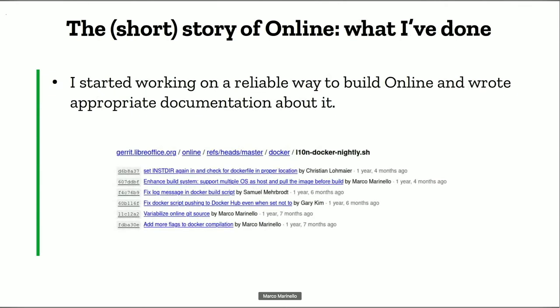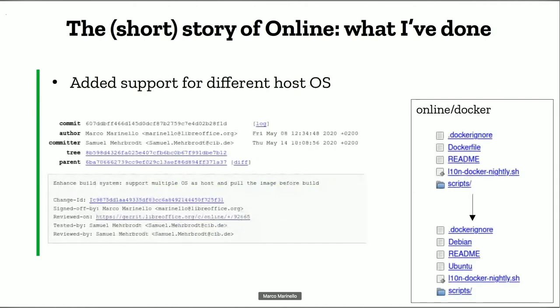So I started working on a reliable way to build Online and wrote appropriate documentation about it. The LNN Docker nightly script was already there and did almost anything we needed — starting from scratch, cloning down the core and Online repository on the branch you want, building it, and then generating a Docker image. It just needed to be expanded a little, for example adding support for different host operating systems. Back then there was only one Dockerfile, which was for Ubuntu, and if you were building on Debian and copying the installation into the Ubuntu container, it wouldn't have worked.